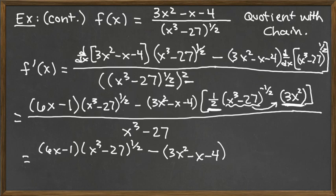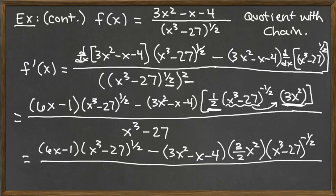So when we do combine those together, that would be 1 half times 3x squared. Perhaps that would just be 3 halves x squared. That would look relatively nice. And then we'd have the x cubed minus 27 raised to the negative a half power. That's not too bad. And we can have that all over the denominator, which is the x cubed minus 27 to complete our answer.